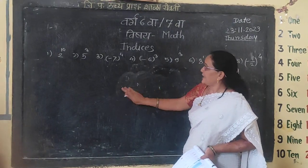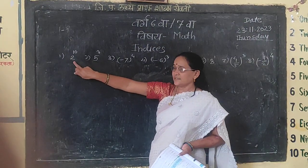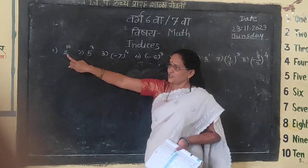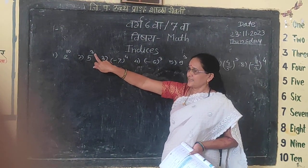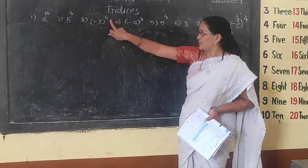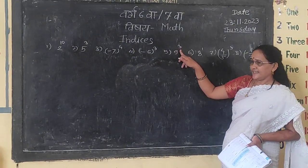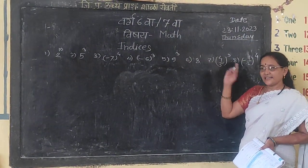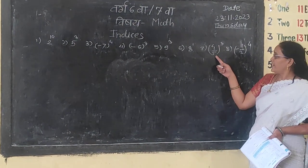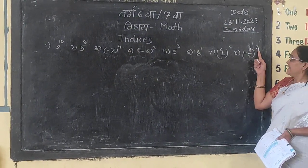8 raised to the power 3: 5 is a base and index. Base is minus 7 and index is 4. Base is minus 6 and index is 3. Base is 9 and index is 3. Here base is 8 and index is 1. Here base is 4 upon 5 and index is 3. Here base is minus 1 upon 2 and index is 4.